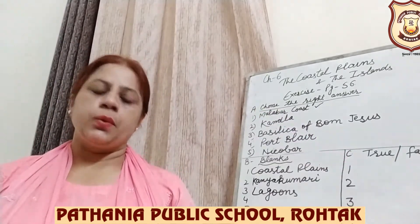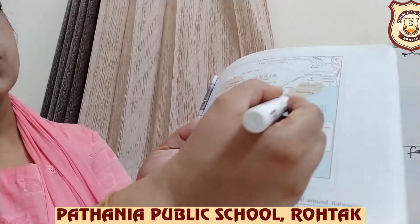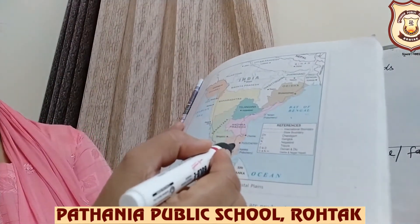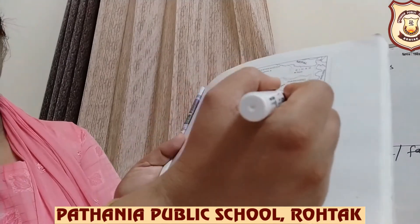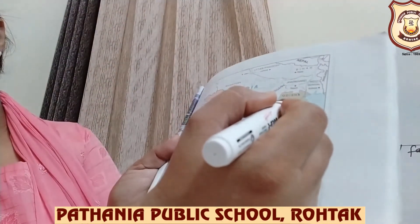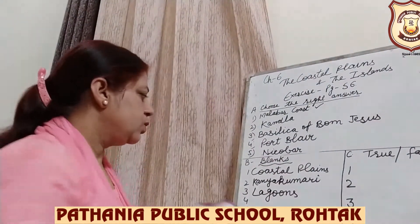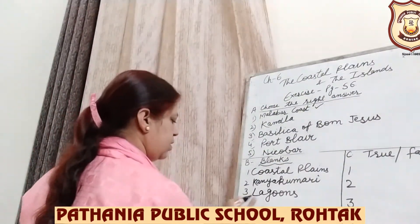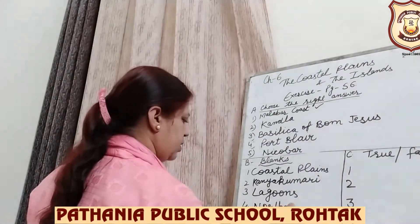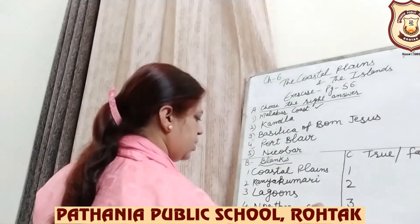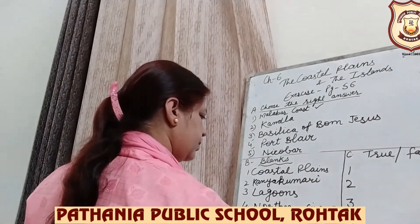Number 4: The eastern coastal plains are called, in the north, Northern Sarkar. So you have to write 'Northern Sarkar.'